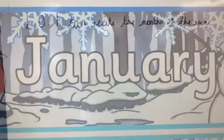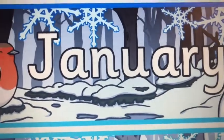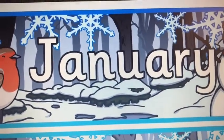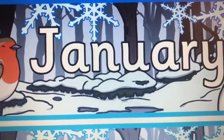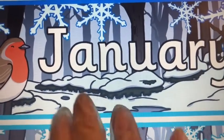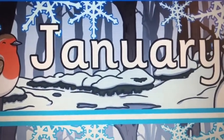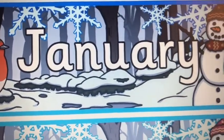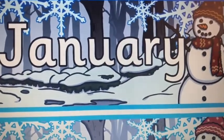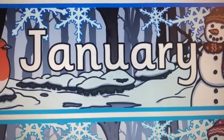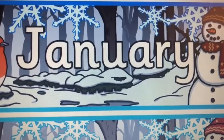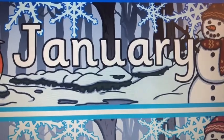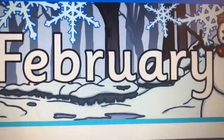So the first month of the year is January. As you can see from this picture we've got snowflakes, a little robin, and snow on the ground, because in January it is very very cold outside. There's a little snowman over here as well. It's very cold in January, and that's when the new year starts. So the first month of the year is January.